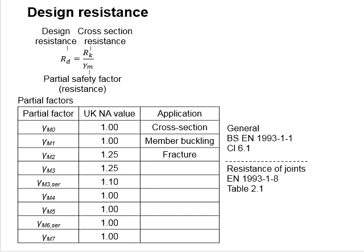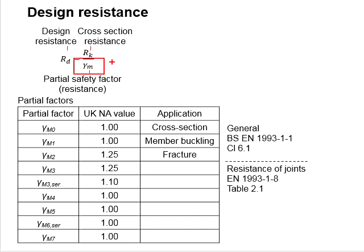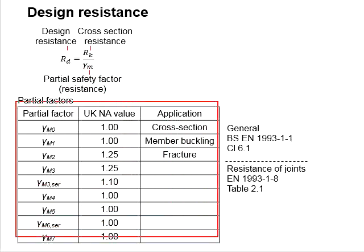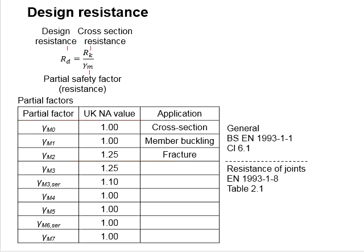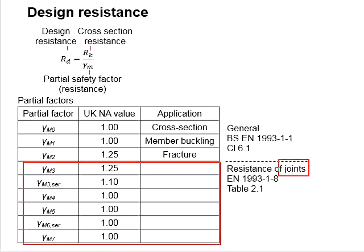In the principles of Eurocode 3, the design resistance of the member is considered equal to the actual resistance of the cross section divided by the partial factors of safety of the members. These partial factors of safety are given in a table where gamma M0, M1, and M2 are given in Eurocode 3 Part 1, while the rest are given in the Eurocode for joints, Eurocode 3 Part 1 Section 8.